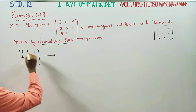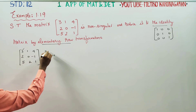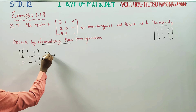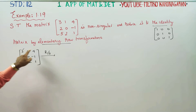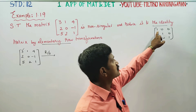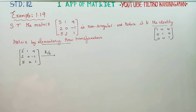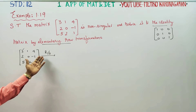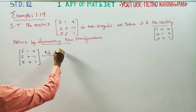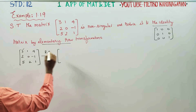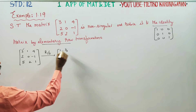First row operation: R1 becomes R1 divided by 3. So row 1 becomes: 3 divided by 3 = 1, then 1 by 3, and 4 by 3.